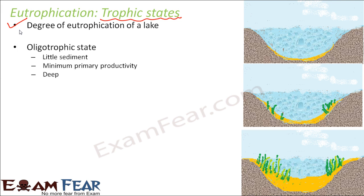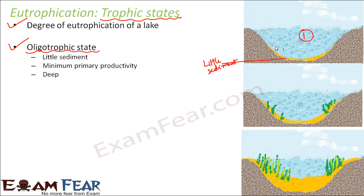As the lake ages, it passes through different states. The first trophic state is the oligotrophic state. In this state the lake is young — there is very little sediment at the bottom. Because of that, minimum primary productivity, since your aquatic plants are less and when producers are less, primary productivity will be less. But it has maximum depth because the sediment is less. So in the oligotrophic state: depth is maximum, productivity is minimum, and sediment is minimum.